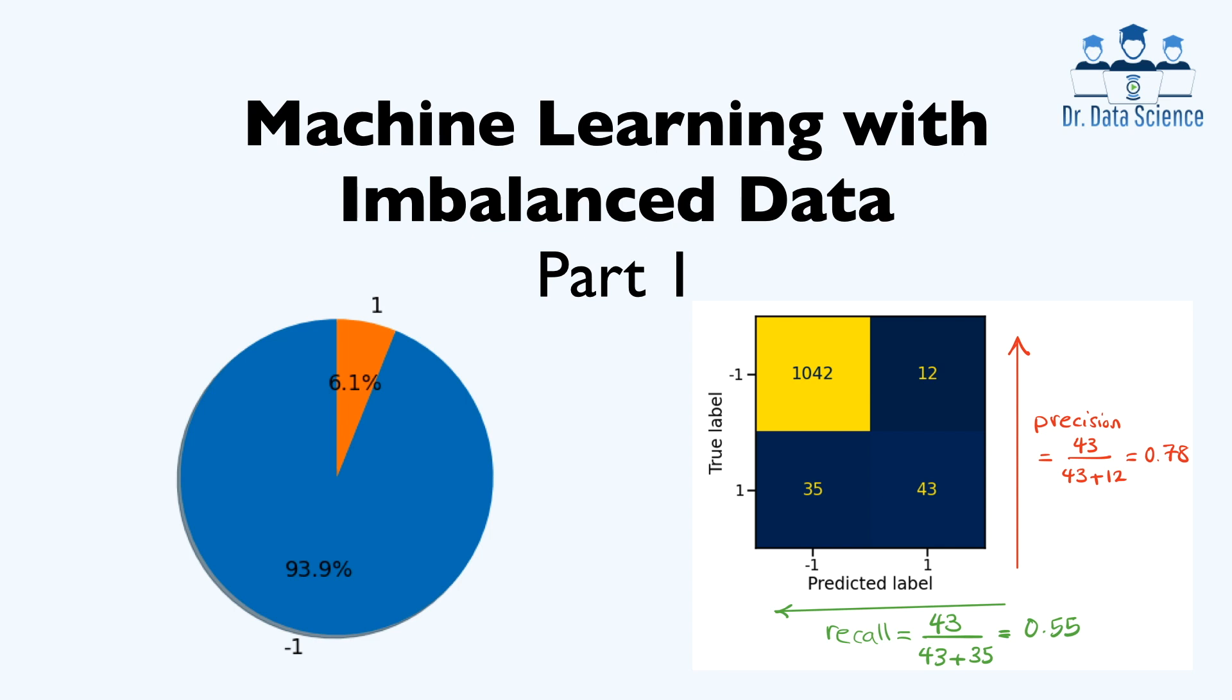Real-world data sets commonly show the particularity to have the number of samples of a given class underrepresented compared to other classes. For example, you may have a binary classification problem with 100 instances, out of which 90 instances are labeled with class negative 1, and then the remaining 10 instances are marked with class 1. This imbalance gives rise to the class imbalance problem, which is the problem of learning a concept from a class that has a small number of samples.